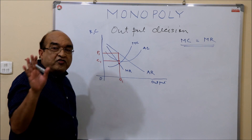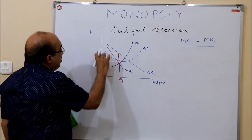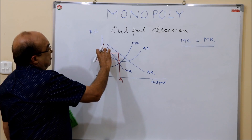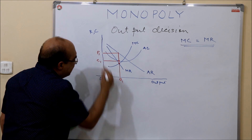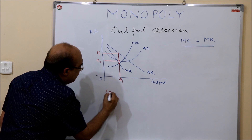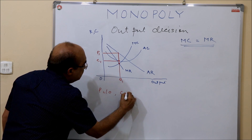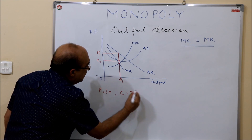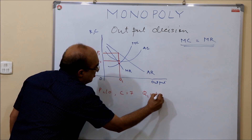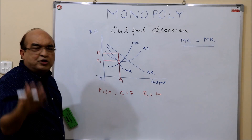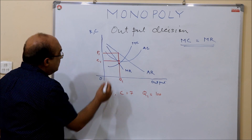The difference between p1 and c1 is the profit per unit. For example, if price is 10, average cost is 7, and quantity q1 is 100, then profit per unit is 10 minus 7, which equals 3.